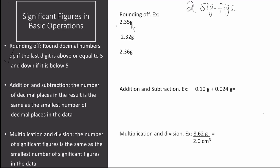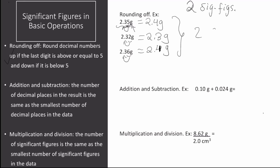This number has three significant figures, so to make it have two, I look at the last digit — five — and this rounds up the three, giving 2.4 grams. Next, we have 2.32 grams. The last digit is less than five, so this rounds down to 2.3 grams. Lastly, we have 2.36 grams, and the last digit is six — greater than five — so this rounds up to 2.4 grams. All of these numbers have two significant figures, as desired.